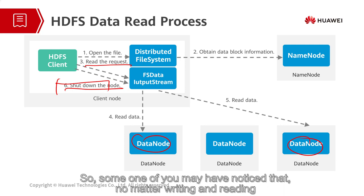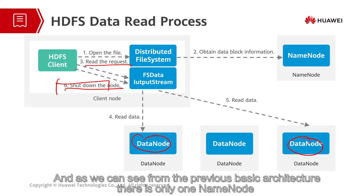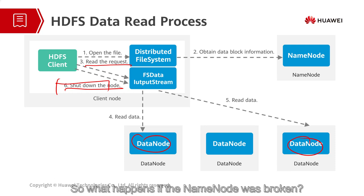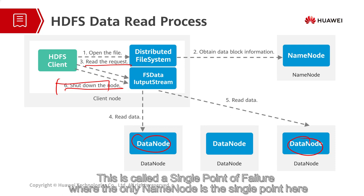You may have noticed that no matter writing or reading, the client needs to contact the name node again and again. And as we can see from the previous basic architecture, there is only one name node. So what happens if the name node is broken? It means that although all the other nodes are still available, the cluster cannot provide services anymore. This is called a single point of failure, where the only name node is the single point, and single point of failure is not tolerable in real industries.